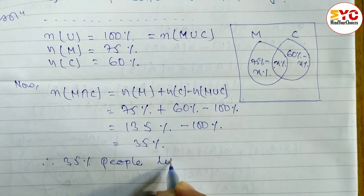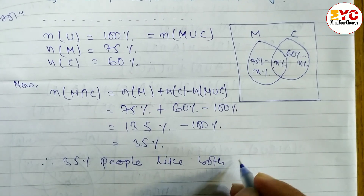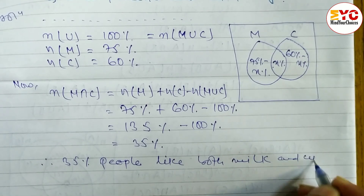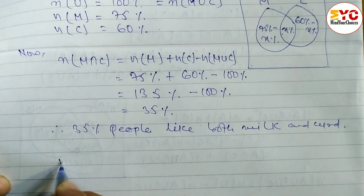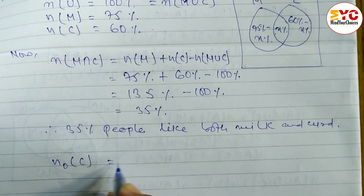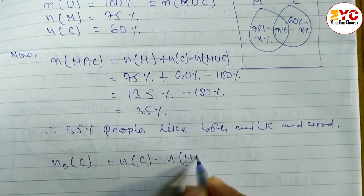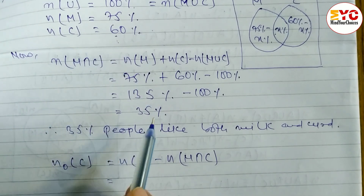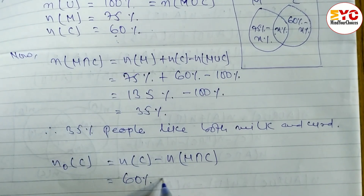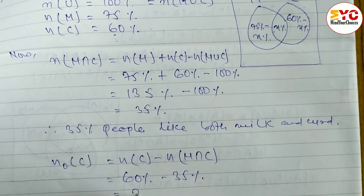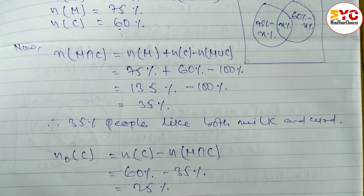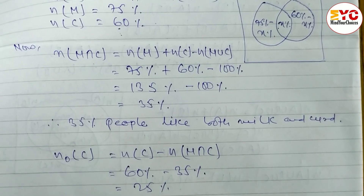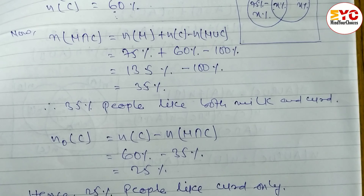Therefore, 35% of people like both milk and curd. For part C, we need to find the percent who like curd only. The formula for curd only is: n(C only) = n(C) − n(M ∩ C) = 60% − 35% = 25%. Hence, 25% of people like curd only.